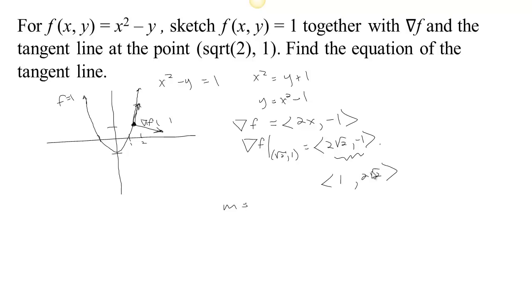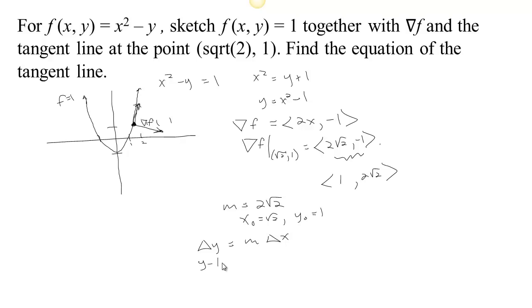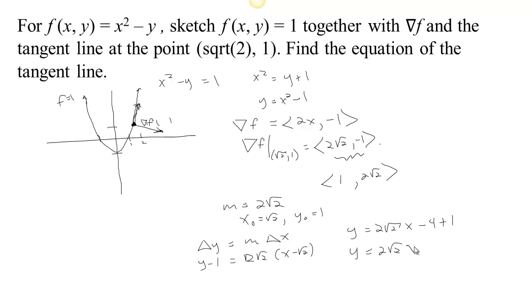The slope is the rise over the run: the change in y over change in x = 2√2 divided by 1 = 2√2. We have the point x₀ = √2 and y₀ = 1, and we have the slope. So: y - 1 = 2√2(x - √2). With simplification, y = 2√2·x - (√2·√2)·2 + 1 = 2√2·x - 4 + 1. The equation of the tangent is y = 2√2·x - 3.